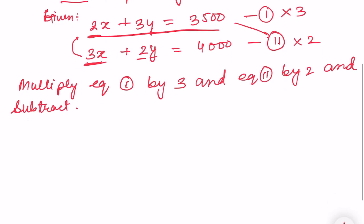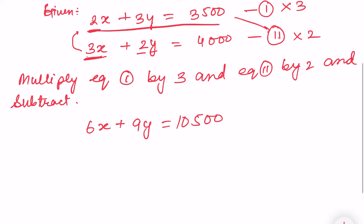So equation 1 multiply by 3: 6x plus 9y equals 10,500. Equation 2, multiply by 2: 6x plus 4y equals 8000.